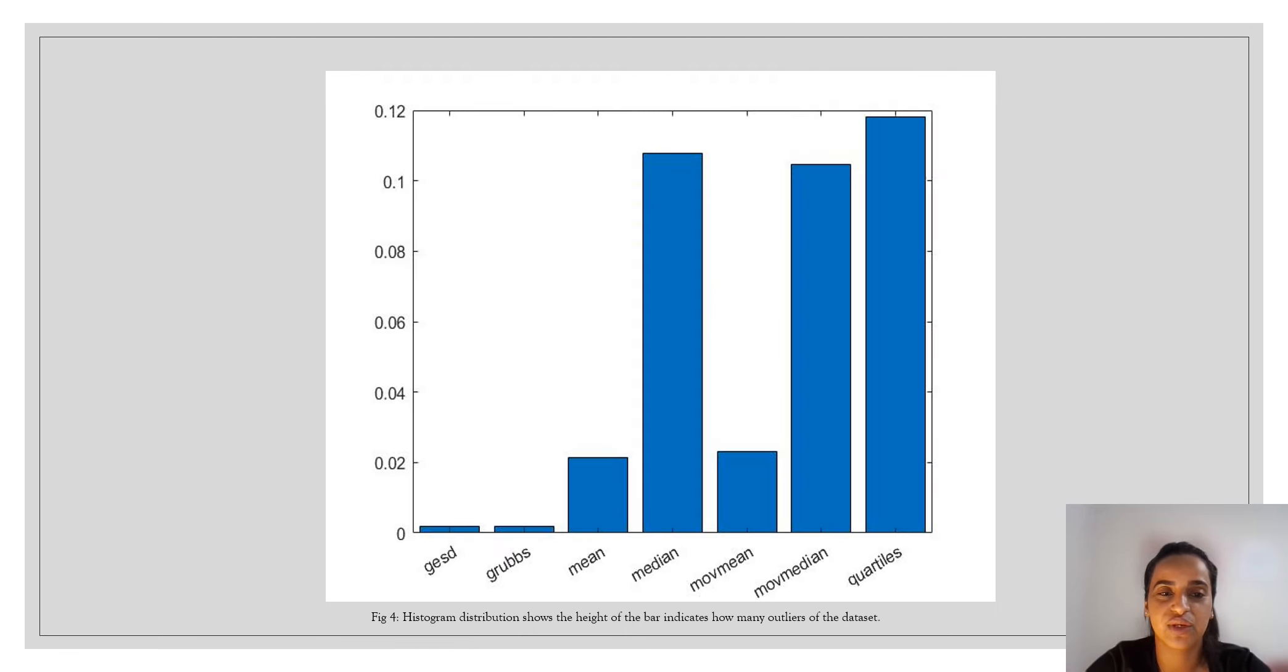And we want to, in the end, show the histogram for our distribution, so you can see the kurtosis got the highest percent of the outliers going down to the Grubbs and GESD at less than 1% of the outliers.